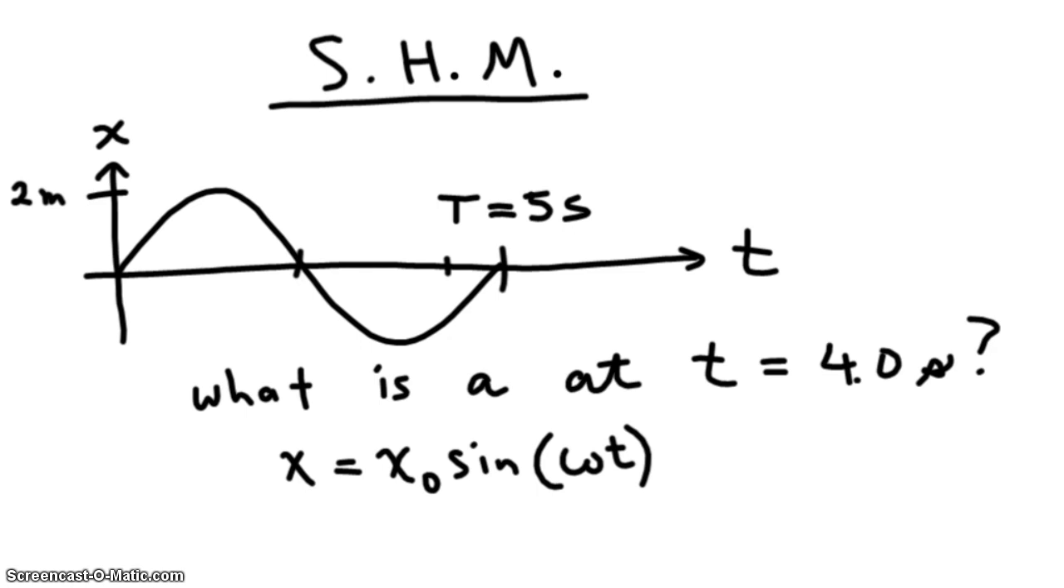Then you remember from memory, you recall, acceleration is negative omega squared times displacement. But you can replace displacement with the right side of this equation. And what do you get? You get omega squared times the amplitude times sine of omega t.